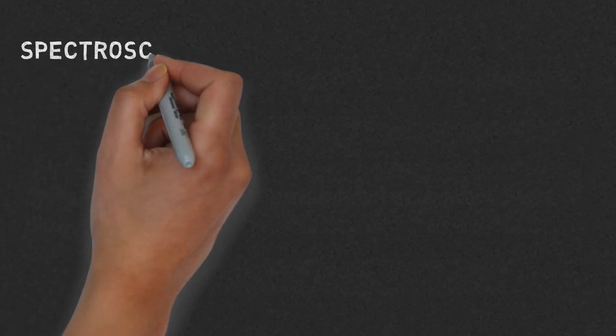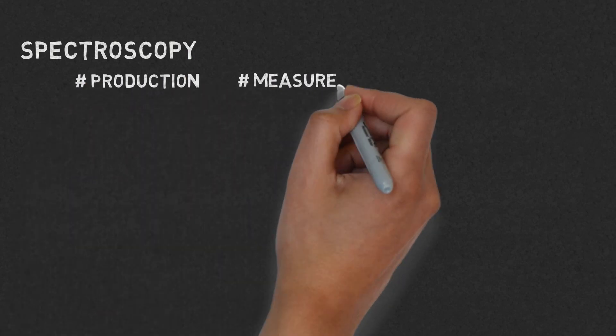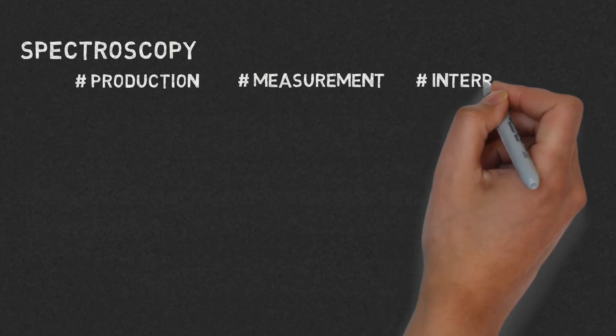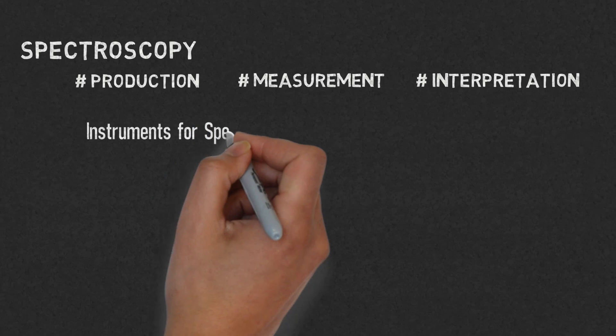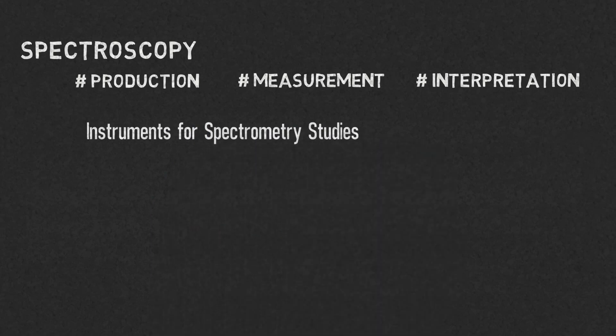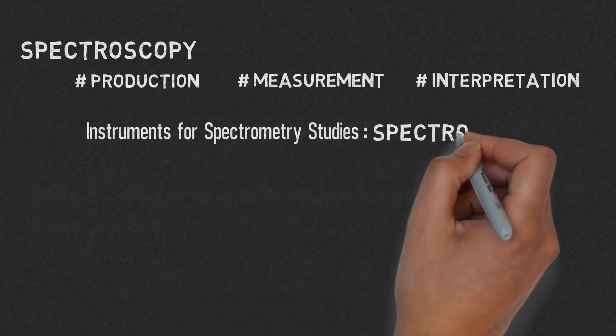Now, let us see what the study of spectroscopy involves. It involves production, measurement, and interpretation of electromagnetic spectra. The instruments used for spectrometry studies are called spectrometers.